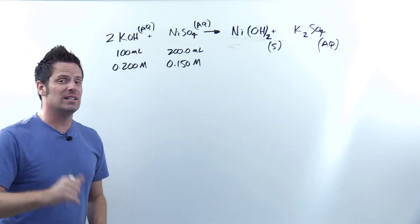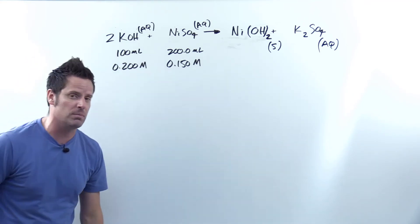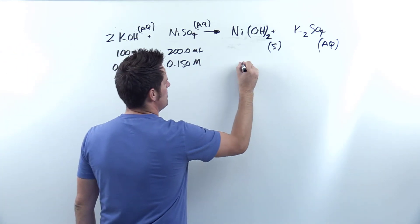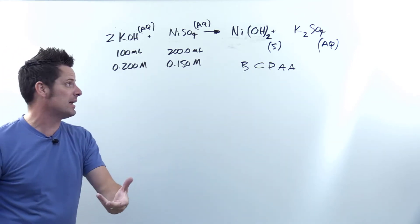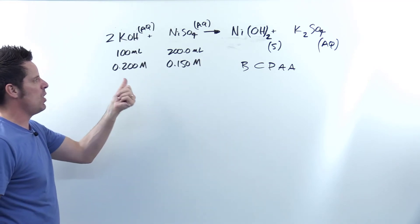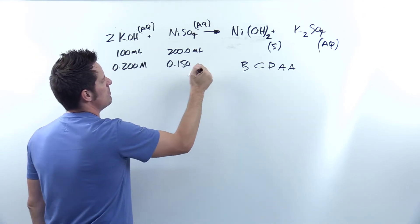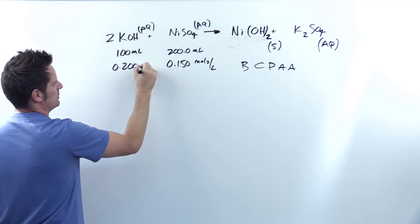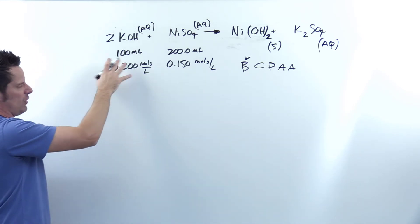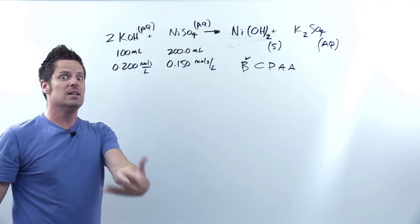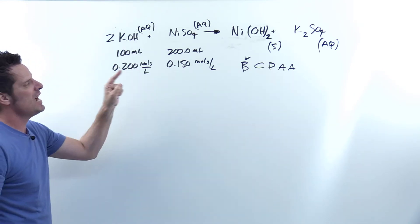Now we get to the tricky thing. Part C asks: what is the limiting reactant? To identify the limiting reactant, you go through the acronym BICPA. Letter B stands for balance the chemical equation — we've already done that in parts A and B. Letter C stands for convert to moles. We're not given these things in moles; we're given milliliters and concentrations. I'm going to replace the letter M — molarity — with moles per liter, because that's what molarity is. So we need to convert each of these into moles.